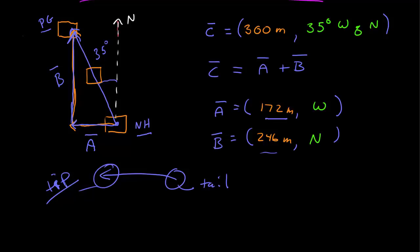So the tail-to-tip method of adding vectors says you start with the first vector, here's A. Now you take the second vector and move its tail to the tip of the first vector. So here, the tail of vector B is at the tip of vector A.